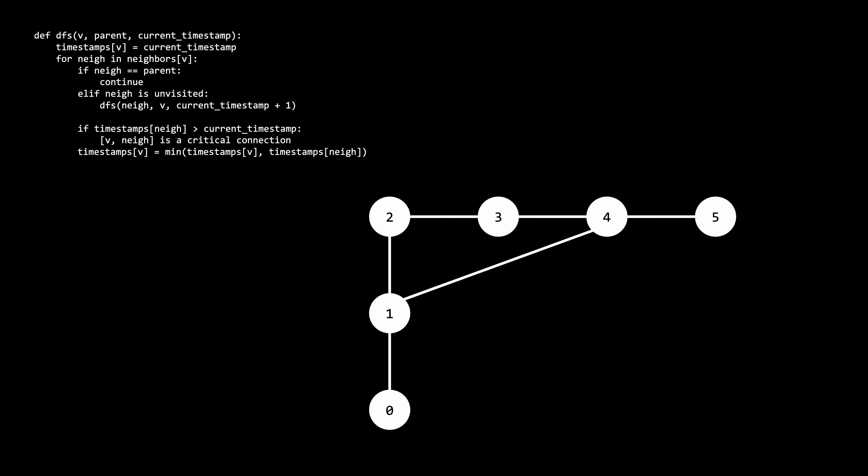That's it for tracing the first example. I'm going to trace through one more example which has both a cycle and a critical connection. To start off, we make an initial call to vertex 0, with no parent and timestamp 1. The only neighbor vertex 0 has is vertex 1. It is unvisited, so we make a recursive call. Vertex 1 gets assigned a timestamp of 2.